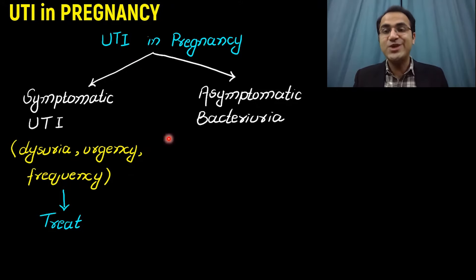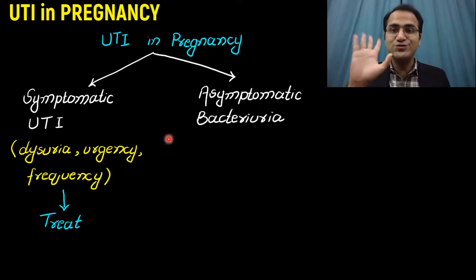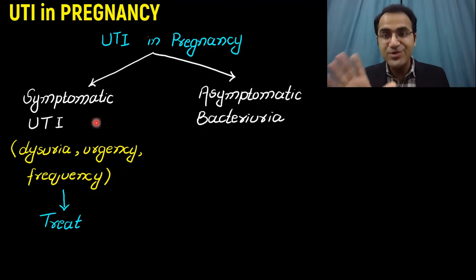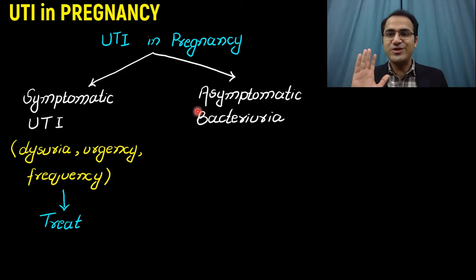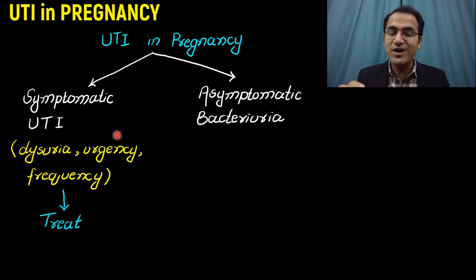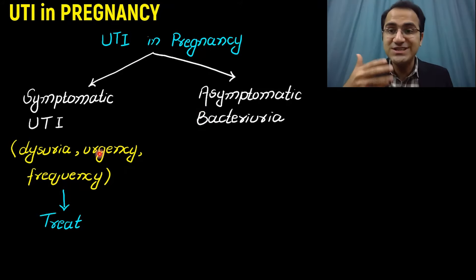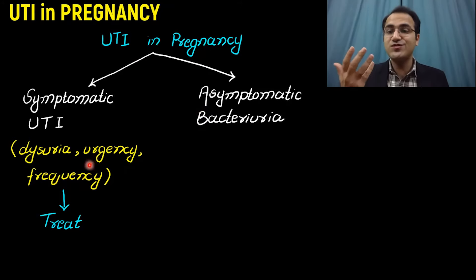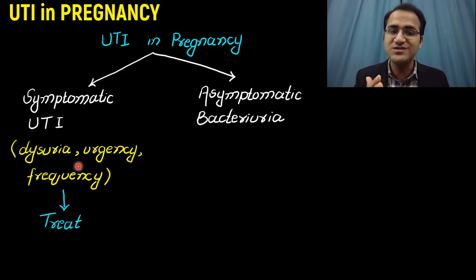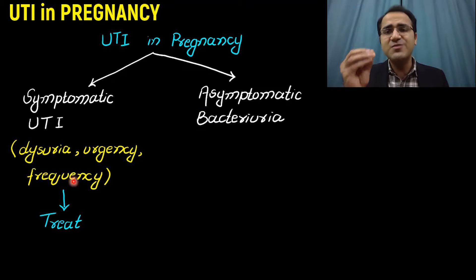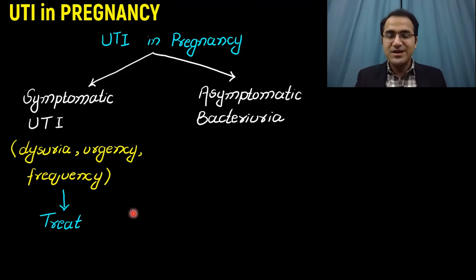UTI in pregnancy can present in two situations: it can be a symptomatic UTI or an asymptomatic UTI. A symptomatic UTI is one in which the patient is having symptoms of urinary tract infection — dysuria, urgency, frequency — and that patient must be treated.